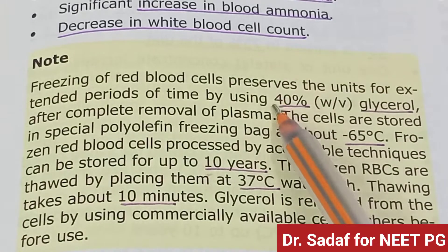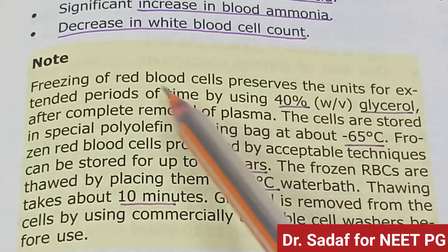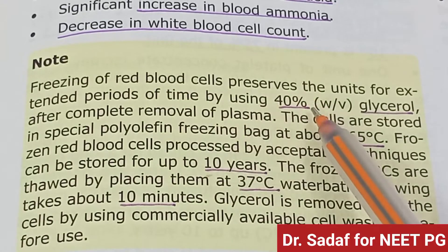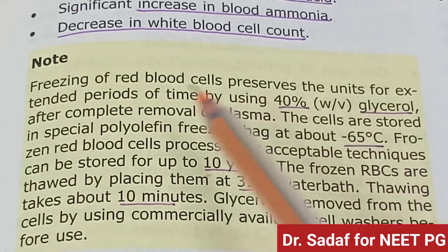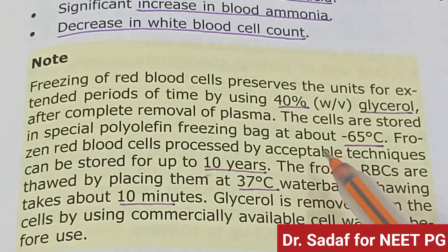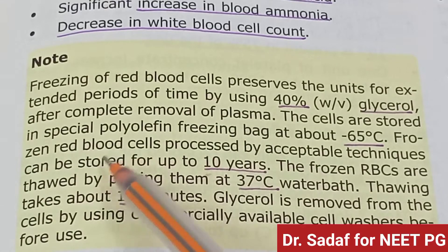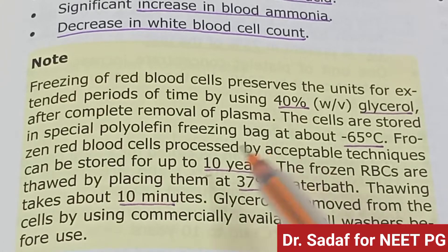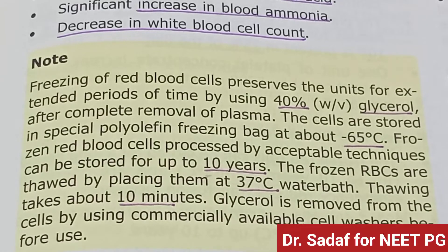Freezing red blood cells preserves the unit for an extended period of time using 40% glycerol. After complete removal of plasma, the cells are stored in special polyolefin freezing bags at about -65 degrees Celsius. Frozen red blood cells can be stored up to 10 years. They are thawed by placing them in a 37-degree water bath for about 10 minutes, and glycerol is removed using a commercially available cell washer before use.